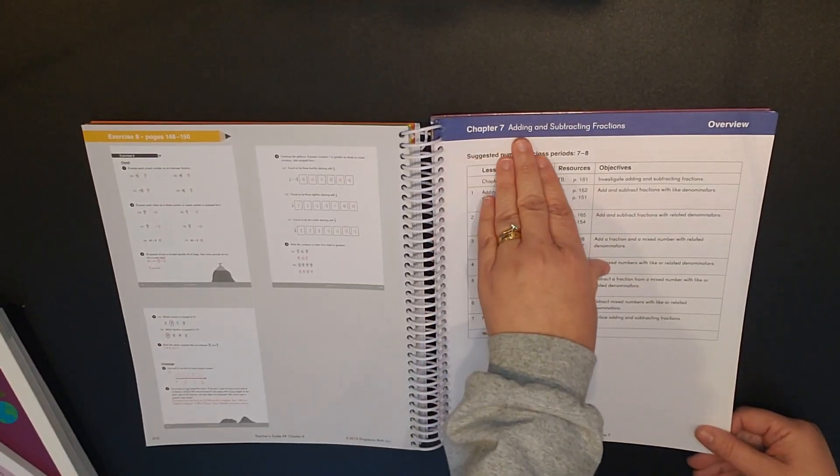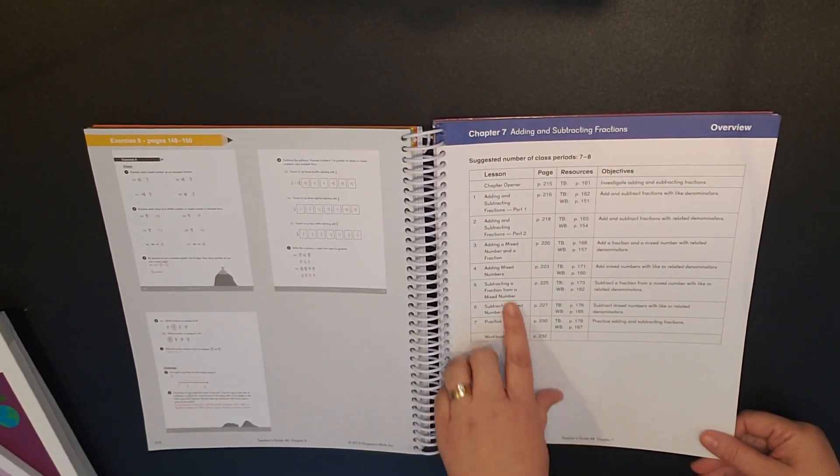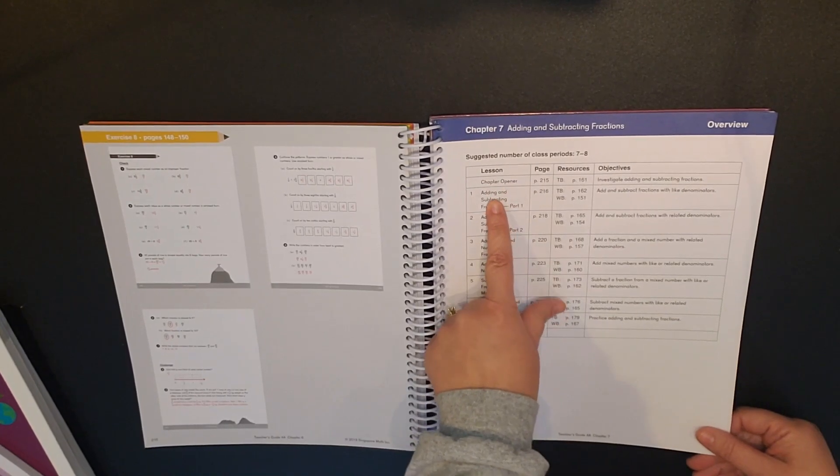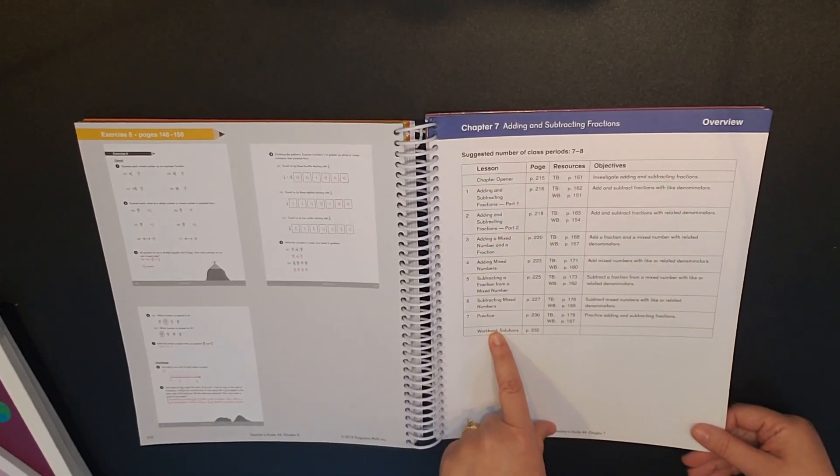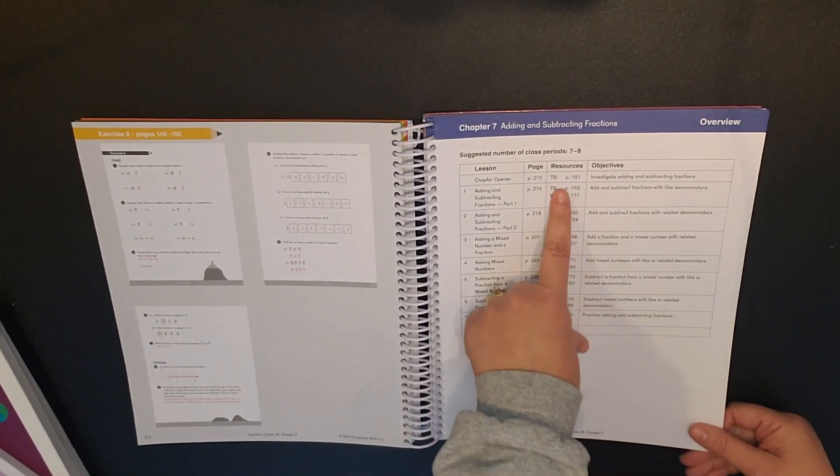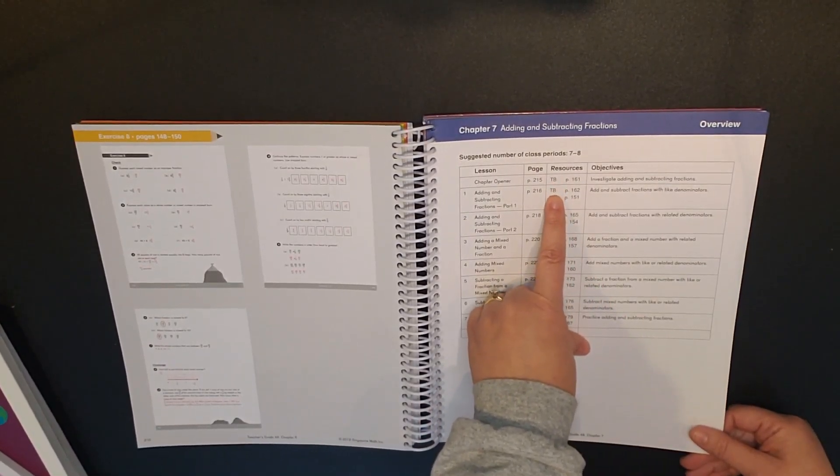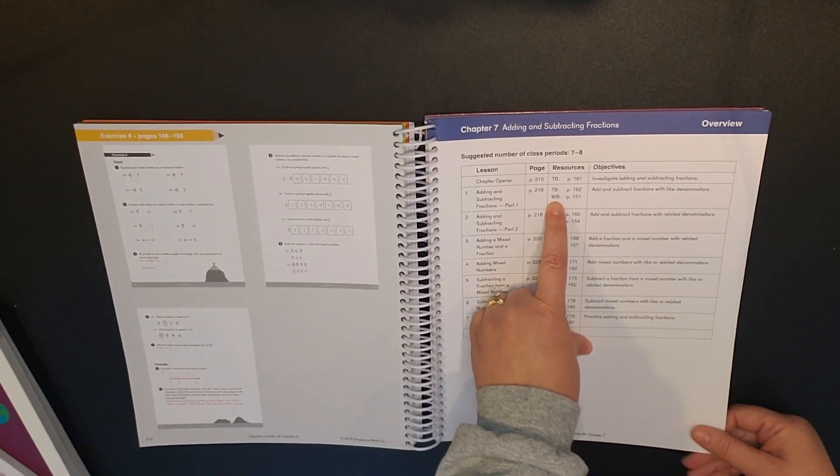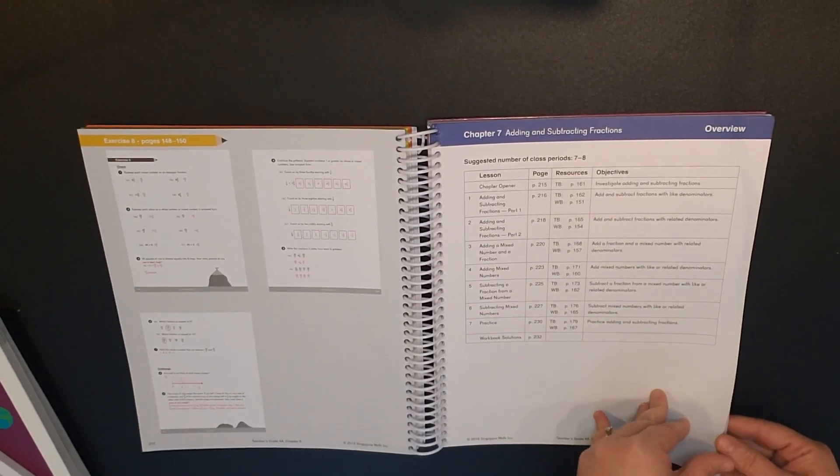So when we start with chapter 7, adding and subtracting fractions, it shows you that we have the chapter opener and then it shows you the lessons and the page for each lesson within this book and then the resources. So you have your textbook resources as well as your workbook resources and then the objectives for each lesson.